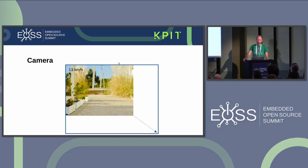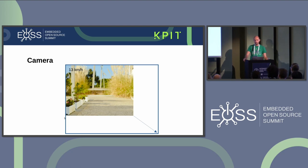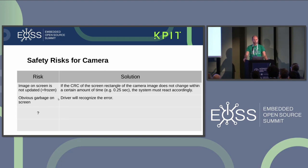What about the camera? Here things are a little bit more complex. We cannot use a one-fits-all solution as we have for the telltales because of several problems. We could calculate the CRC of the whole camera image, but that will not work if we add an overlay — adding an overlay will change the CRC. The same happens if we scale the camera image; it will lead to a different CRC. So in the case of the camera, we have to analyze each risk separately and find a solution. Which risks do we have? We have the risk that the image on the screen is not updated — meaning the camera image is frozen. A possible solution is: if the CRC of the screen rectangle of the camera image does not change within a certain amount of time, for example a quarter of a second, the system must react accordingly.